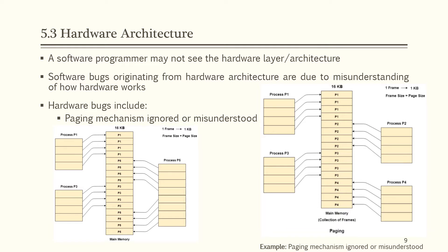When P2 and P4 move to waiting state, 8 frames become empty and other pages can be loaded there. Process P5 of 8 KB (8 pages) is waiting in the ready queue. Since 8 non-contiguous frames are available and paging provides flexibility of storing processes at different places, the pages of P5 can be loaded in the places vacated by P2 and P4.